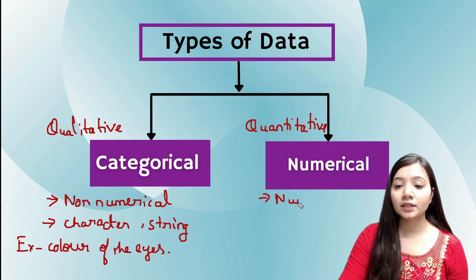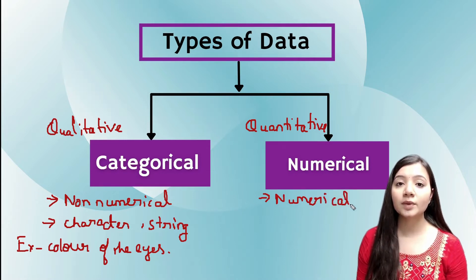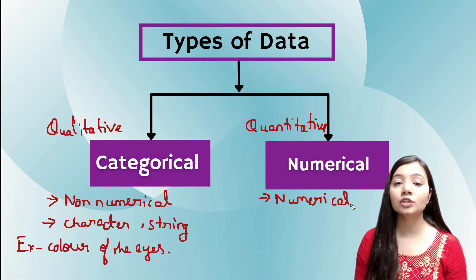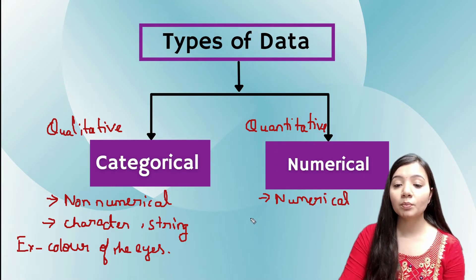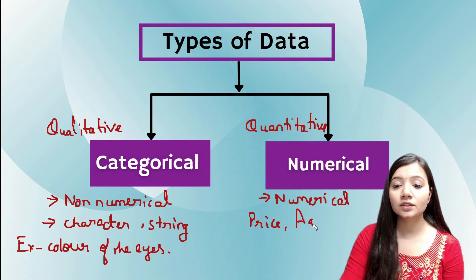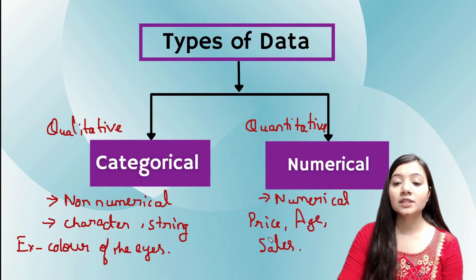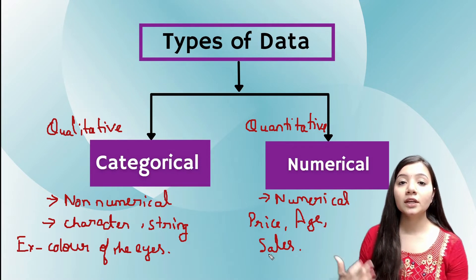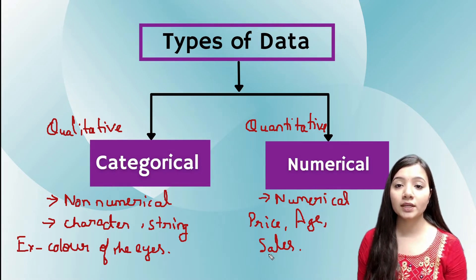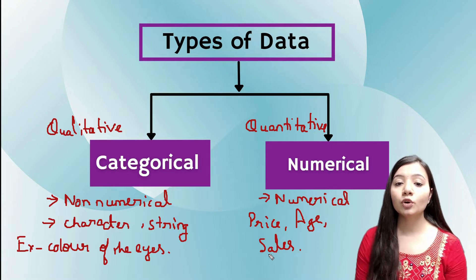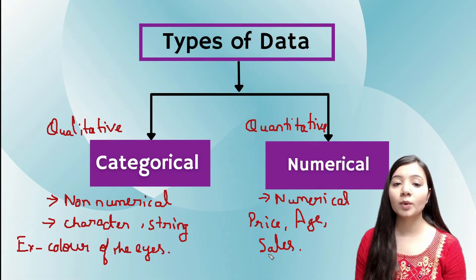Now talking about numerical data, these data are numerical in nature. All the data present in numerical form is called numerical data and also called quantitative data. For example, price, age, or sales. These types of data will contain integer values or float values.